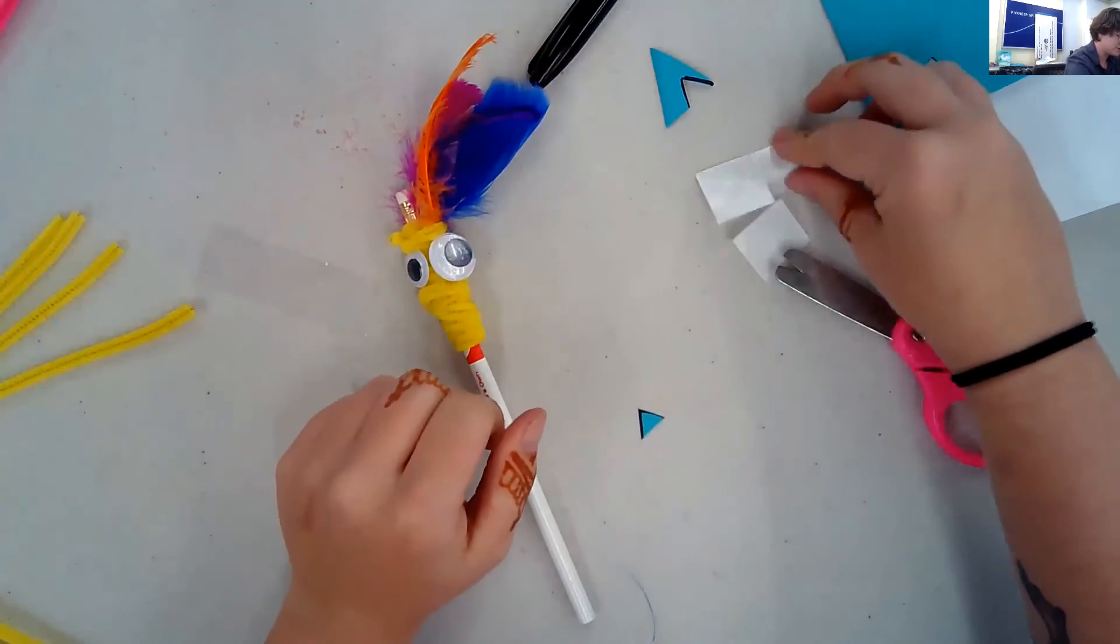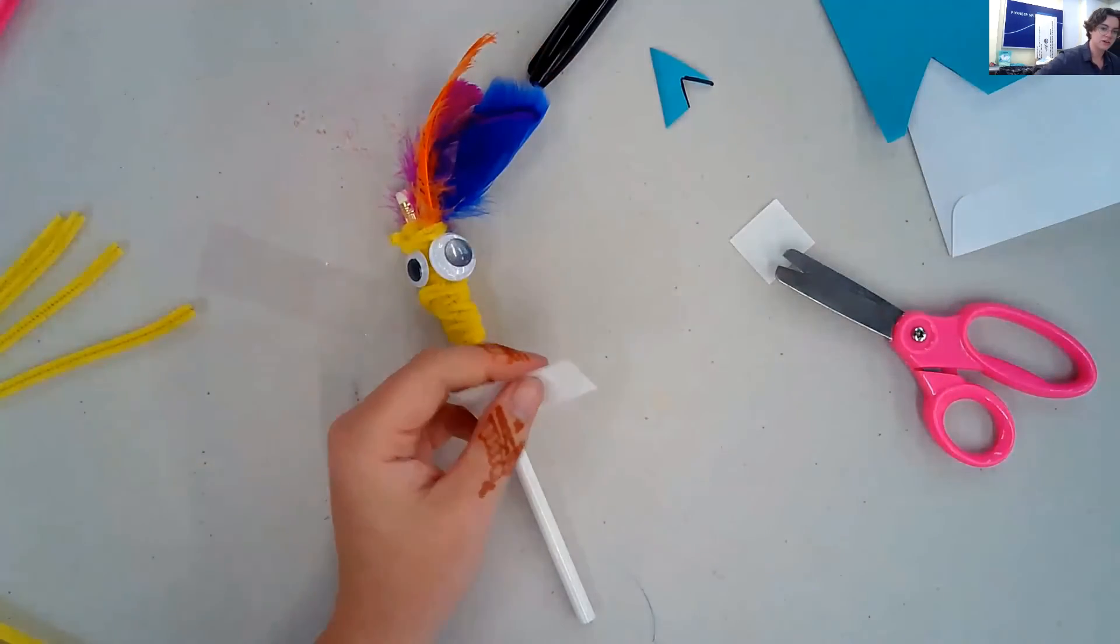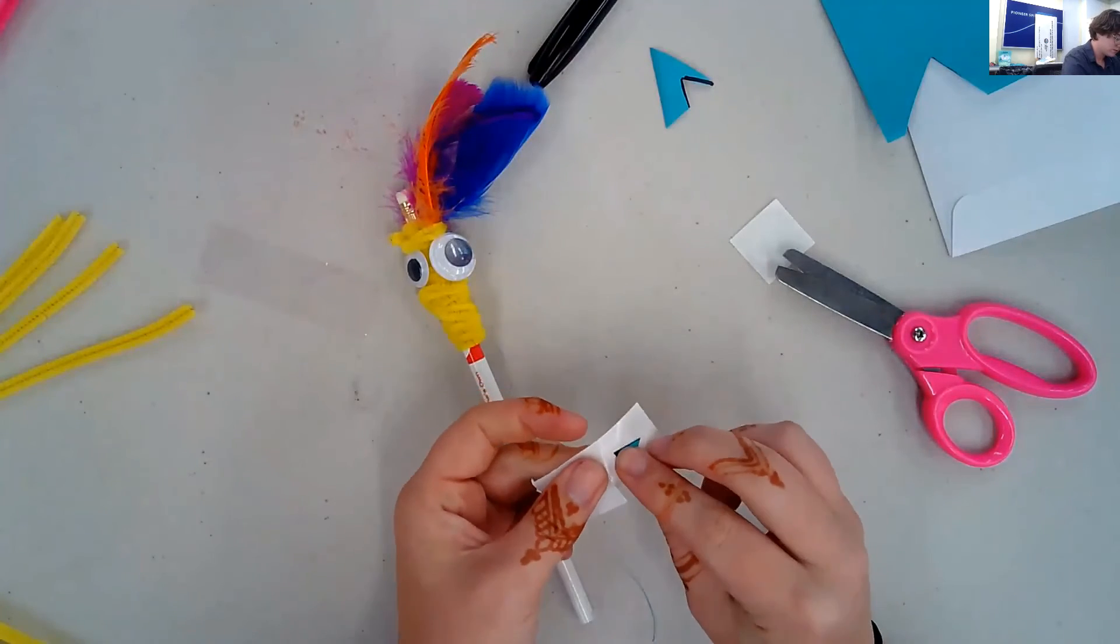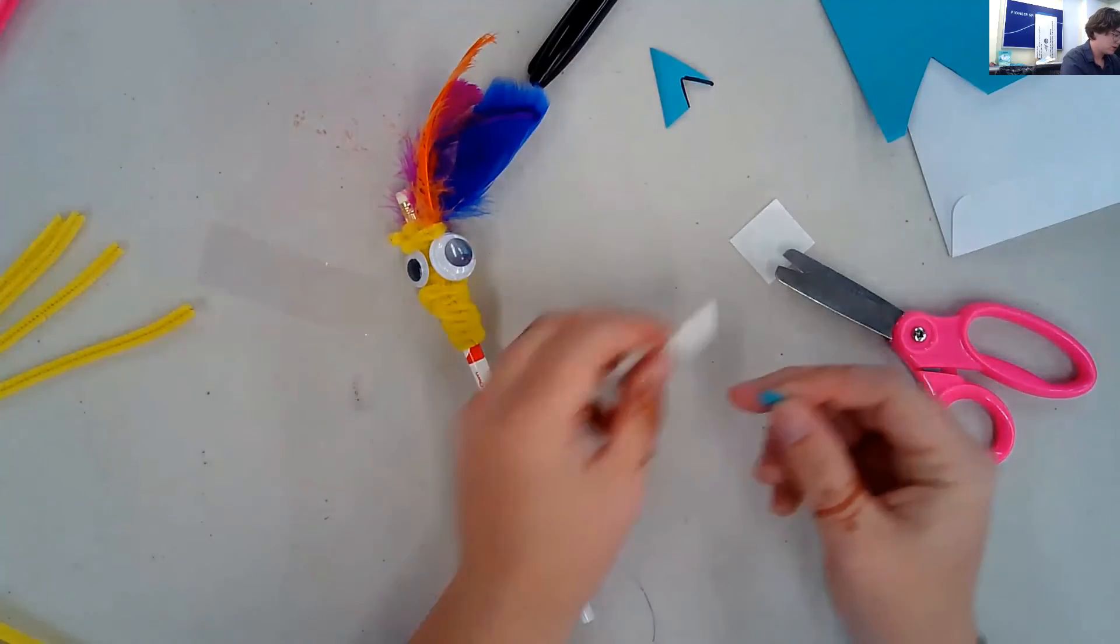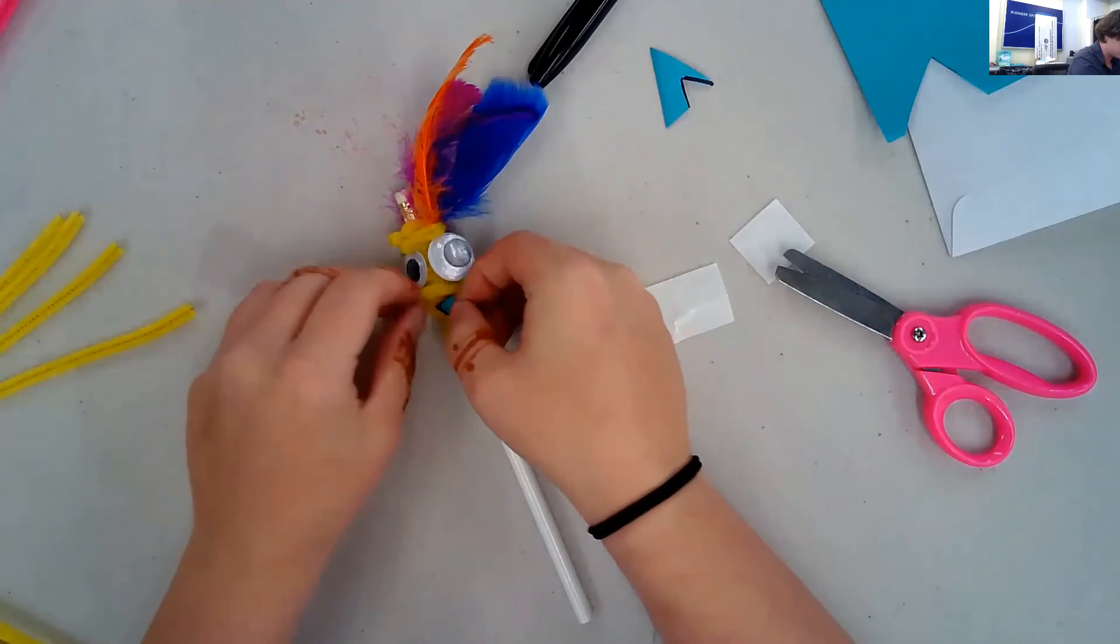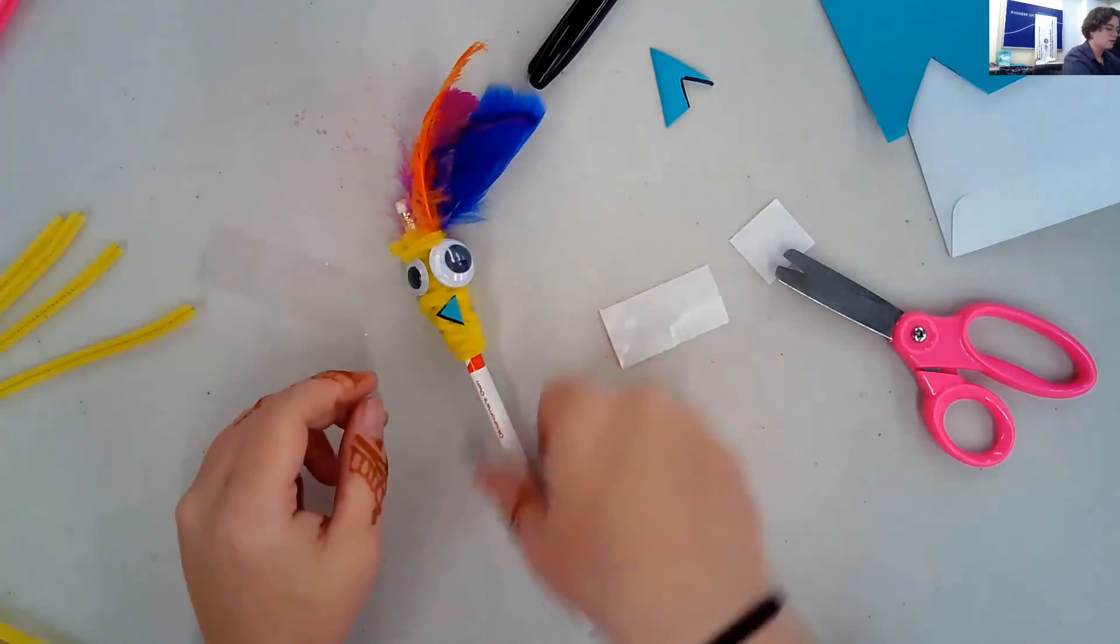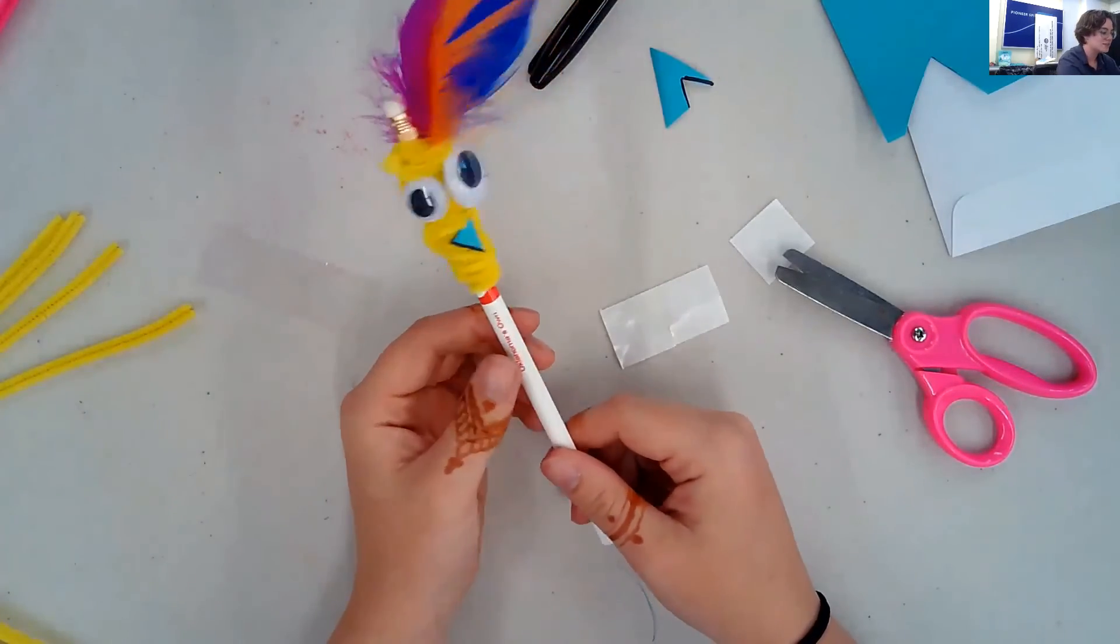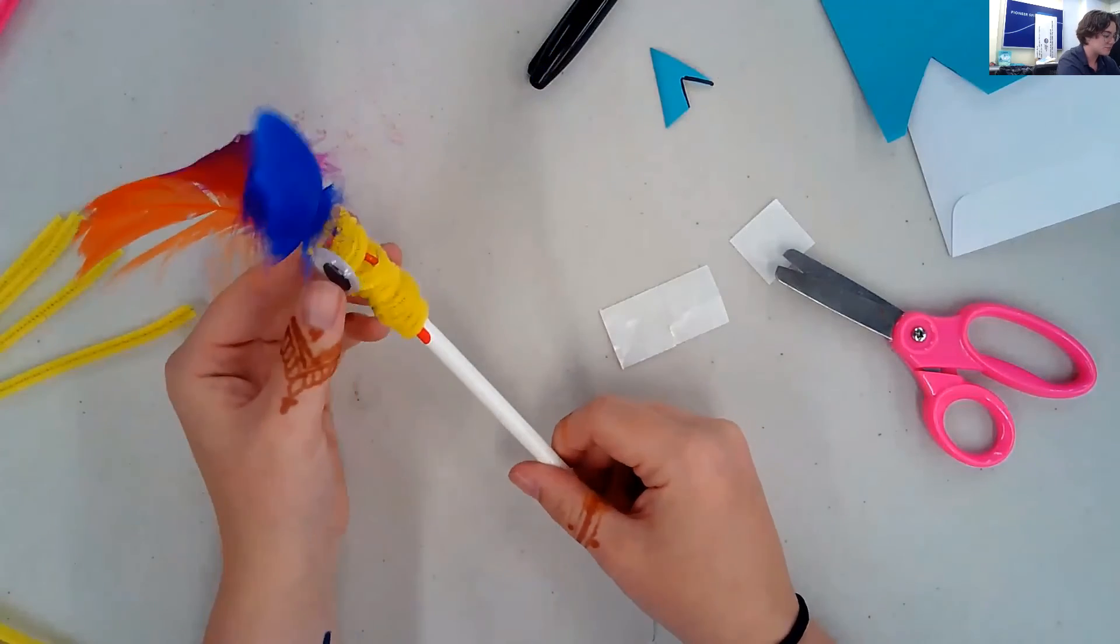And finally, we get to glue on the beak. There is the beak. This is your final product. It's a pretty easy craft to make.